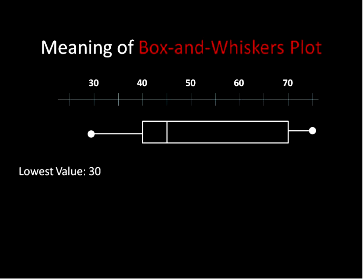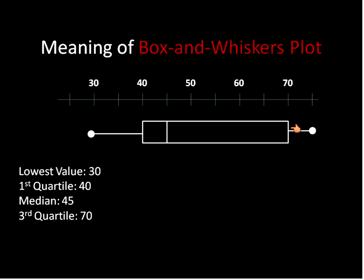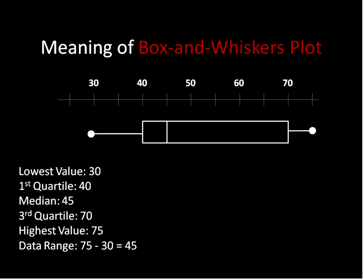Now for the meaning of each part. The lowest value is about 30. The first quartile is 40, right where this upright line comes in. The median is 45. The median is also sometimes known as the second quartile, but we always call it the median. The third quartile is 70, and the highest value is 75. The range goes from the highest value to the lowest — 75 minus 30 gives us a data range of 45.